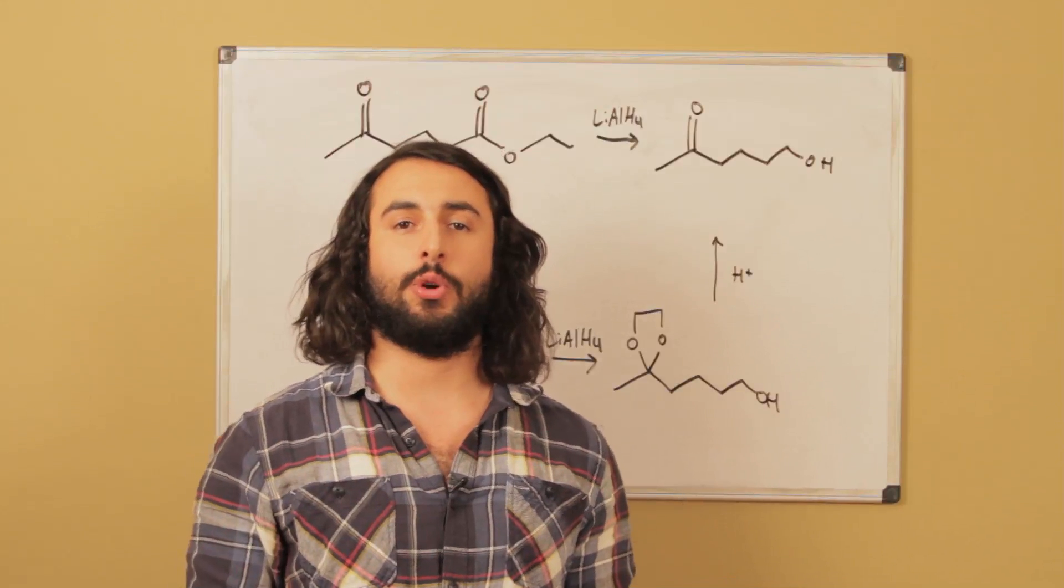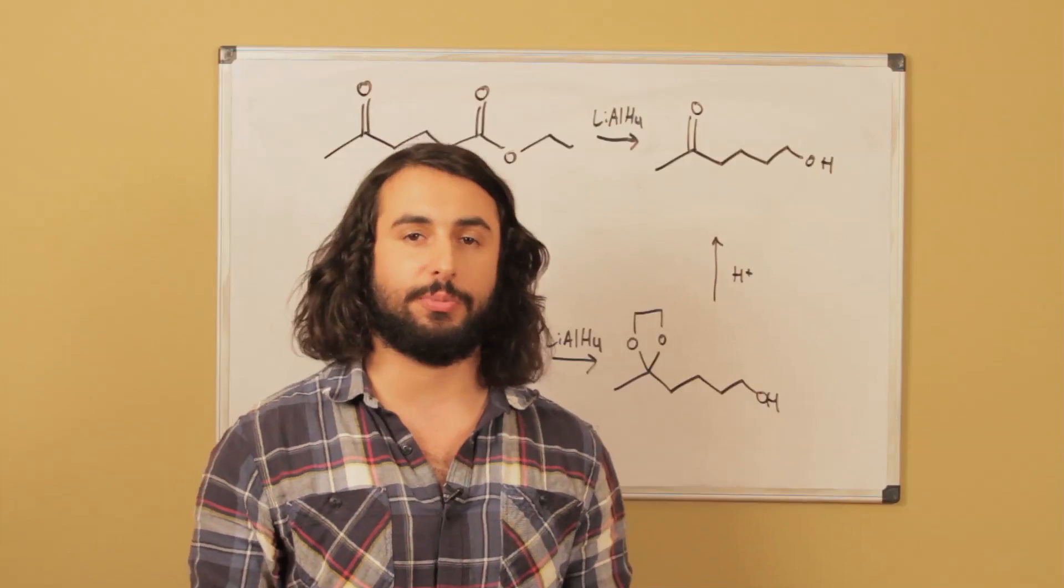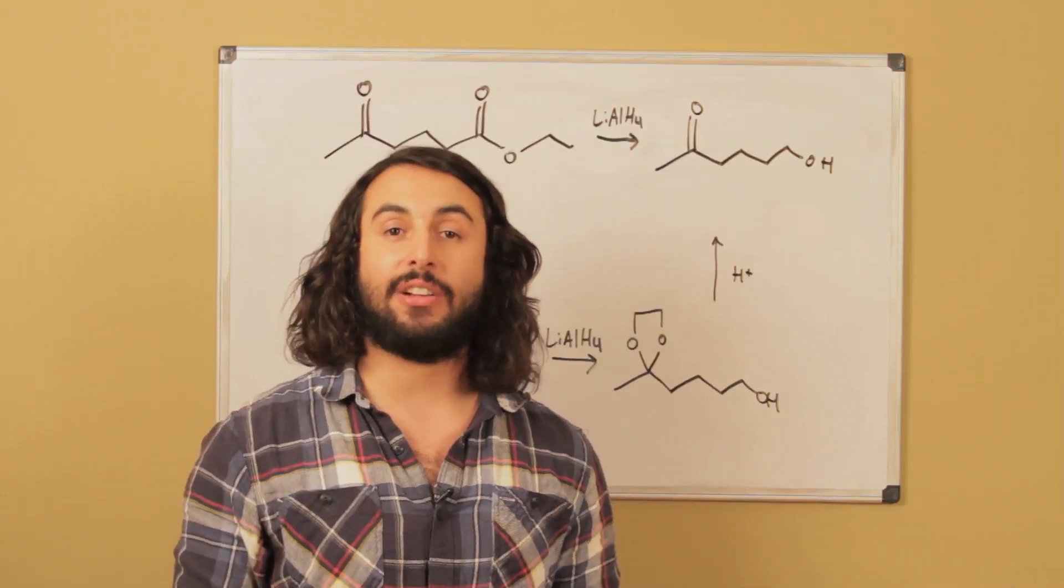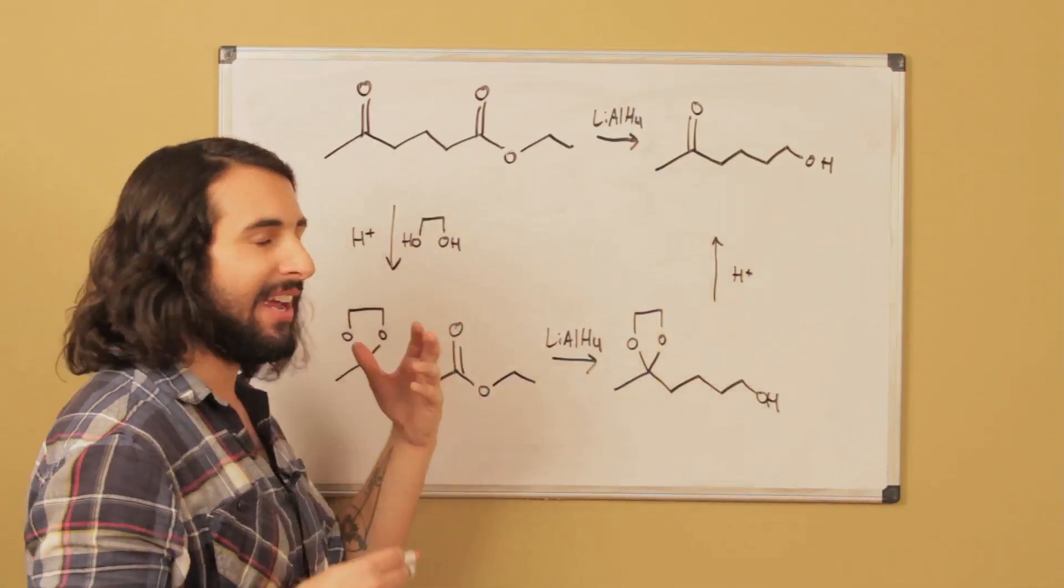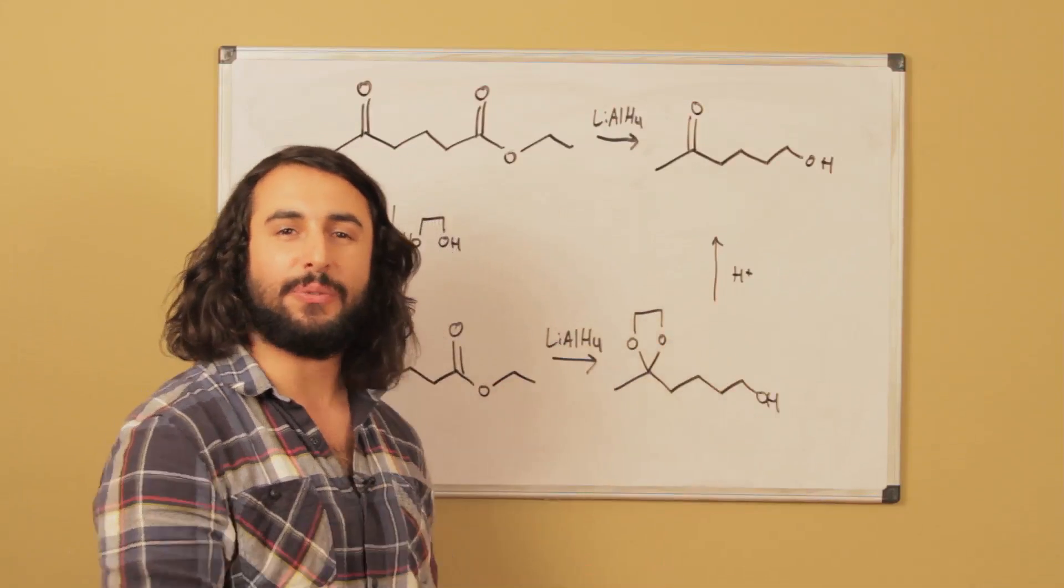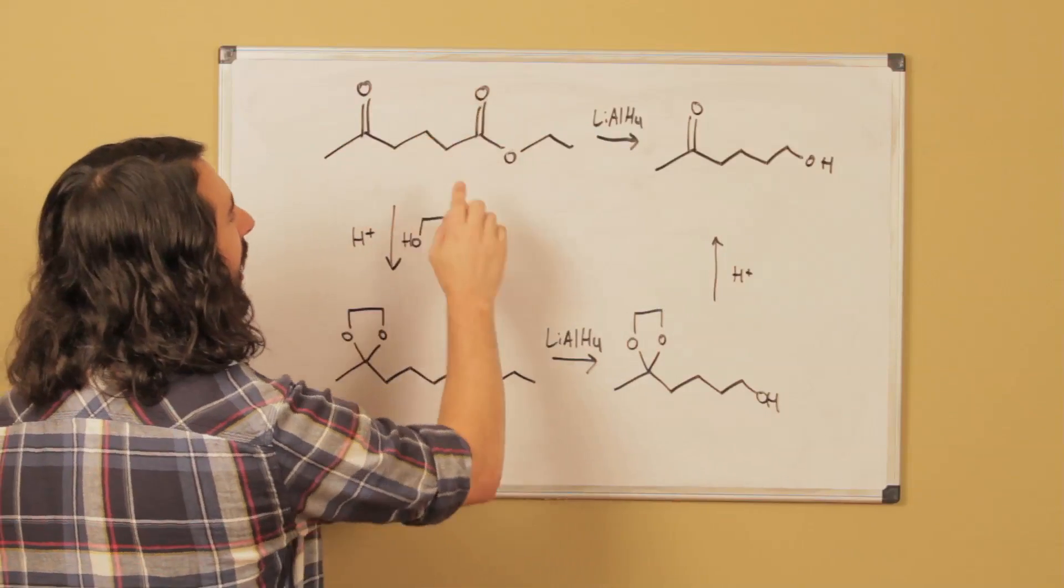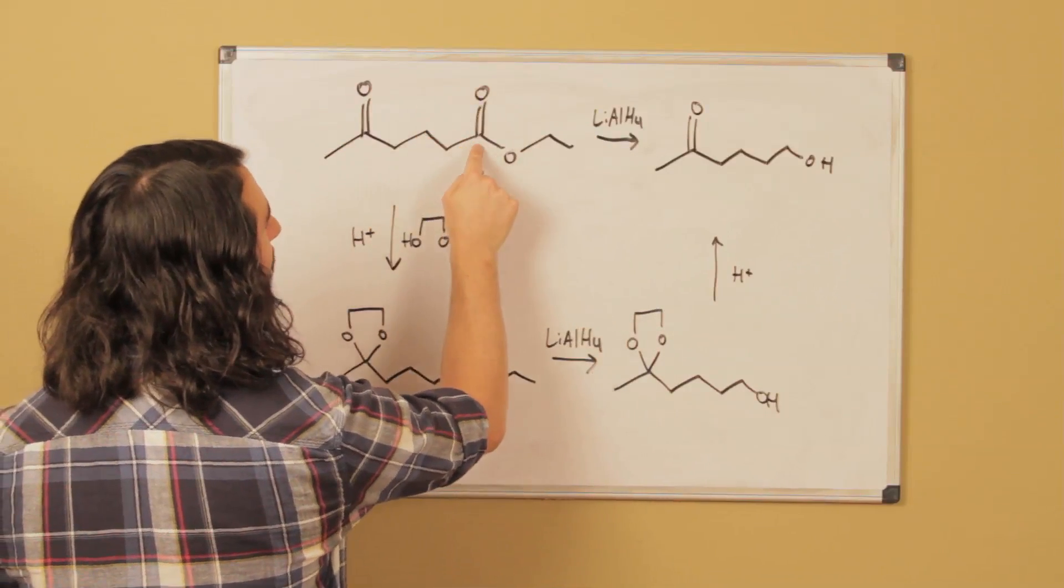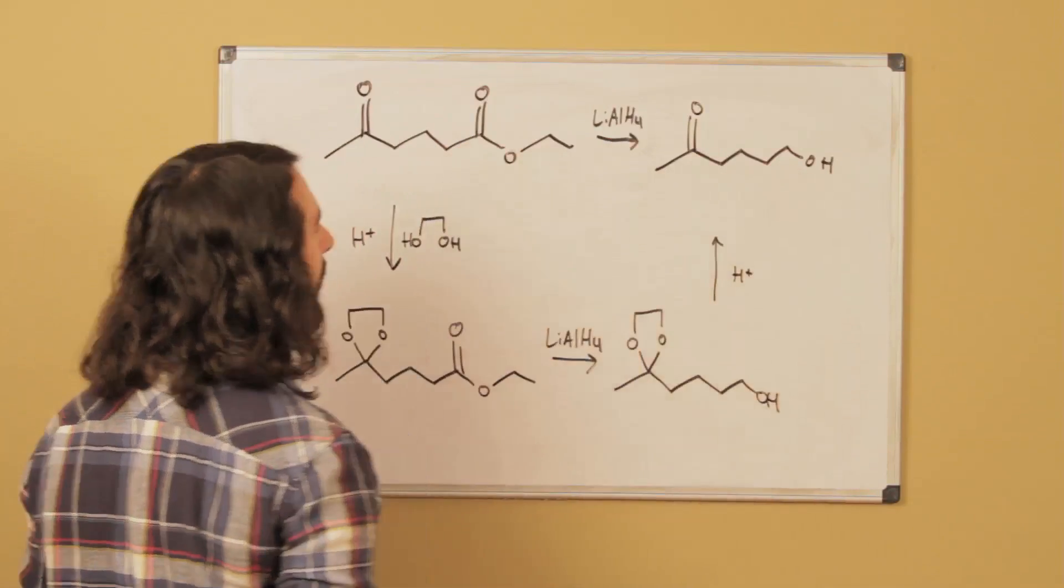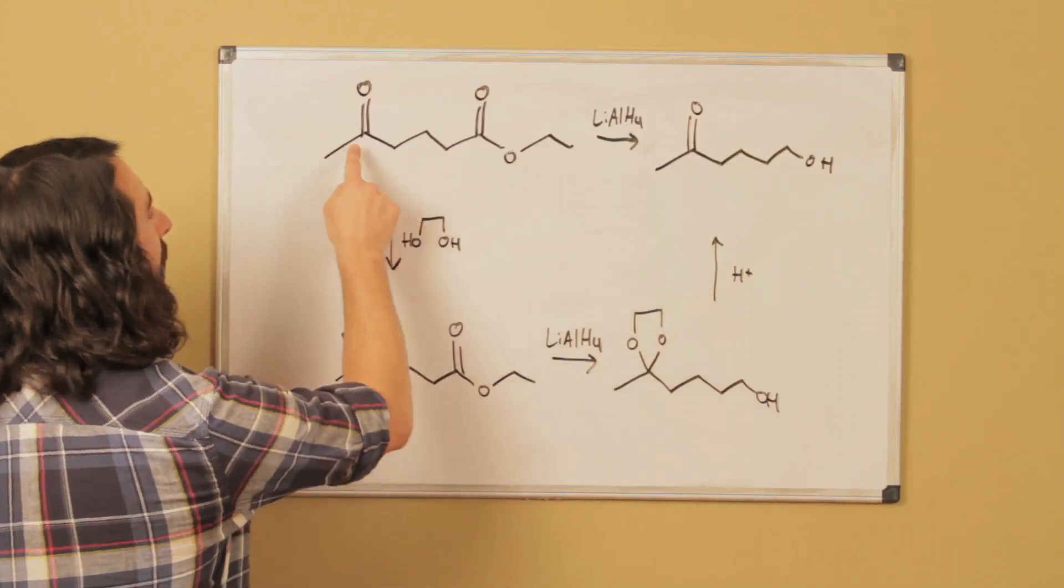We looked at protecting groups for hydroxyl groups, but there's protecting groups for pretty much any functional group. Let's look at a protecting group for an aldehyde or ketone. This is always about some transformation we want to achieve but there's a different functional group that's going to mess it up. Say we have this substrate and we want to specifically reduce this ester to the primary alcohol.